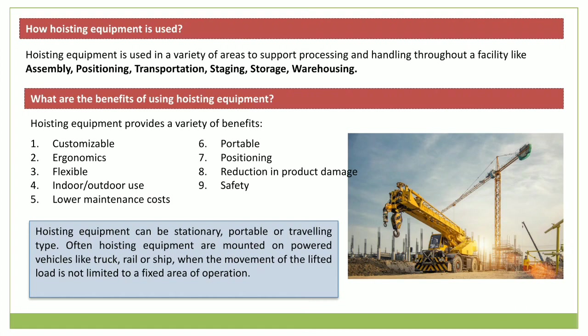After watching the video, you should now know how hoisting equipment is being used. It is used for: assembling, which means moving products to the production process; positioning, which means securing a component for additional work; transportation, which means loading or unloading the finished product onto trailers, rail carts, or trucks; staging, which means holding a work process for additional production; and storage and warehousing, which means transporting items to and from storage areas and moving large and heavy products to and from docks.